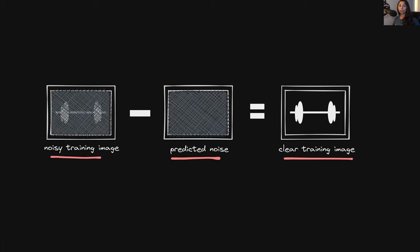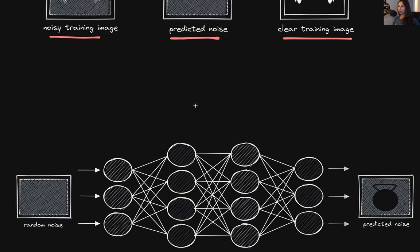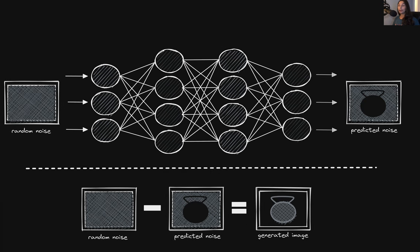Once we have this trained network that can accurately predict noise, we can use it for inference. During inference, we can pass it an image purely of noise with no image hidden underneath. This network has been trained to identify noise present in images of gym equipment, so during inference it will output what it thinks is noise in the random noise image we're passing — which will leave behind pixels that ultimately appear as a piece of gym equipment. Because the model has been trained to identify noise present in images of gym equipment, it will essentially carve out a piece of gym equipment from the noise and identify everything else as the actual noise.